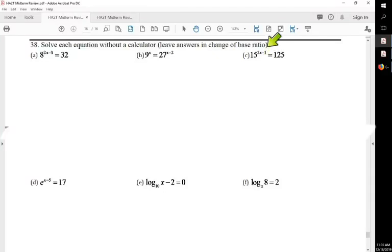Now, solving C is different than solving these ones over here because these ones over here you can rewrite them to have the same base. What do I mean by that? 8 is the same as 2 to the 3rd power. 32 is the same as 2 to the 5th power. So see, they both have a base 2. You can do the same thing with this guy and a base 3. This one you can't. You can't do that.